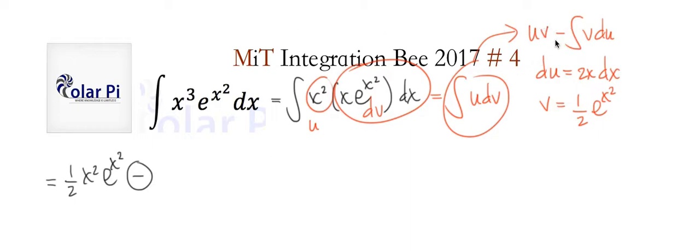minus. Now the integral of vdu: v is a half e to the x squared and du is 2x, so this 2 in front of the x and this one half can cancel, and we could just write x e to the x squared. But then